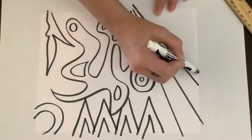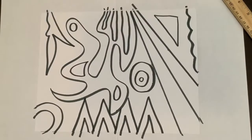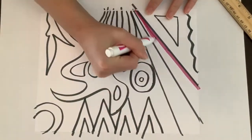You can draw rectangles and squares using a ruler. You can do only geometric shapes or only organic shapes or a combination of both. As you can see, I did a combination of both in mine.